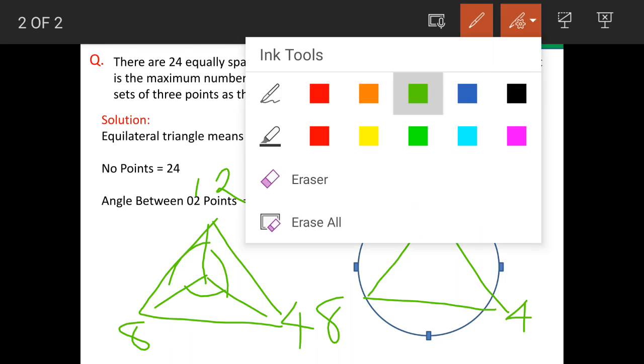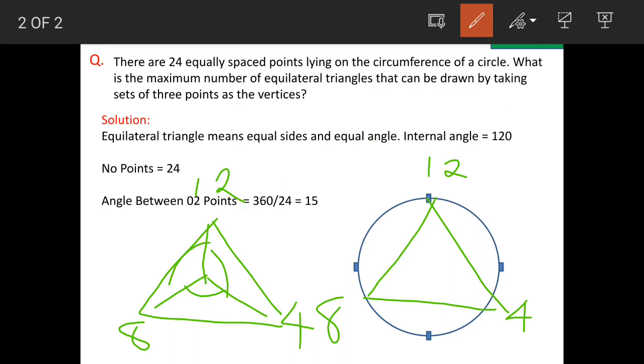Now, so this is the first triangle. The second one will be from the next point, which is at 15 degrees. So like this, like this.